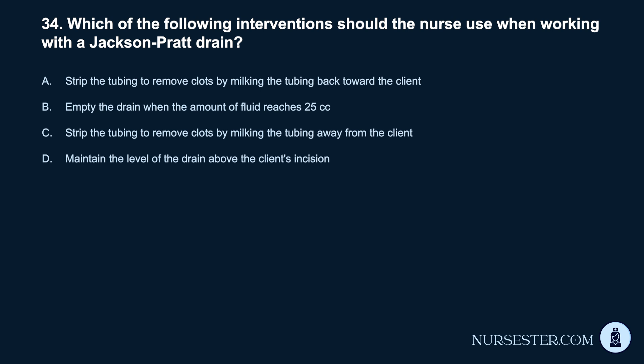Question 34. Which of the following interventions should the nurse use when working with a Jackson-Pratt drain? A. Strip the tubing to remove clots by milking the tubing back toward the client. B. Empty the drain when the amount of fluid reaches 25 cubic centimeters. C. Strip the tubing to remove clots by milking the tubing away from the client. D. Maintain the level of the drain above the client's incision.